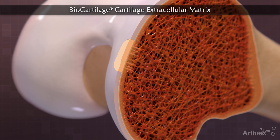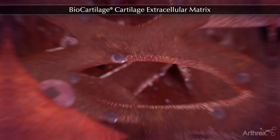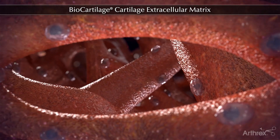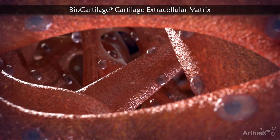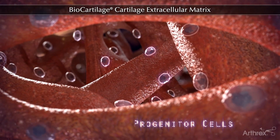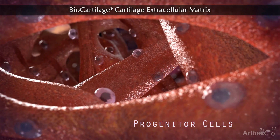Following the marrow stimulation procedure and implantation of biocartilage, marrow and progenitor cells travel through the cancellous bone and into the biocartilage scaffold.